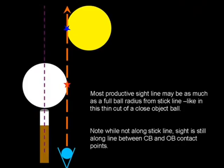Here's a situation where the most productive sight line is definitely not that of the ghost ball aiming system. In other words, definitely not over the line of the stick. This is a thin cut with the cue ball close to the object ball. Almost any player, if you watch them and watch where their eye is, will sight this from the right edge of the cue ball to the left edge of the object ball. So this is sighting along the contact point line.